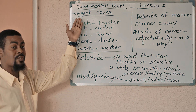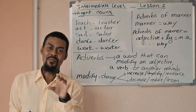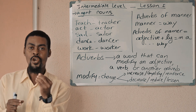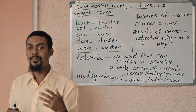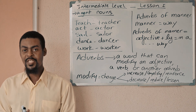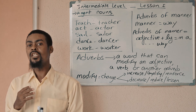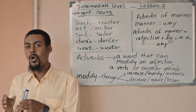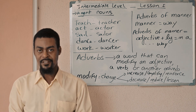Today we're going to talk about agent nouns. I believe everybody who is watching right now understands the word agent. Agent is someone or something that represents another. For example, if I have to do something and someone goes and does it or represents me, that person goes out and represents me — that person is my agent.